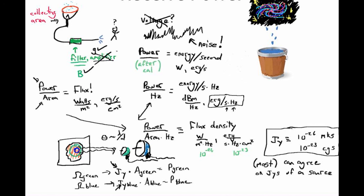But here's the other funny thing. Because theta — the distance across this patch — goes as lambda over d, the area of this patch, which is like theta squared, will go as lambda squared over d squared.